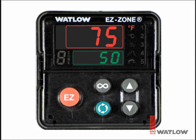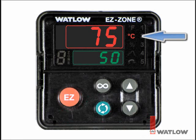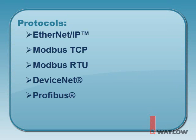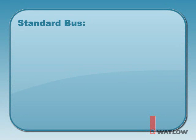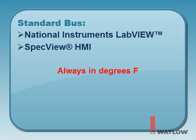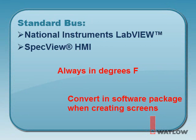EasyZone models with a seven-segment display may be set to display temperature-related information in degrees Fahrenheit or Celsius. Models utilizing serial or Ethernet protocols may be set independently to transfer temperature-related information in degrees Fahrenheit or Celsius. Models utilizing the standard bus serial communications — communicating to National Instruments LabVIEW or the SpecVIEW HMI software — will always transfer temperature-related information in degrees Fahrenheit. These software packages have means within them to perform temperature conversion if required.